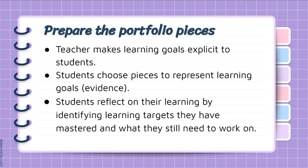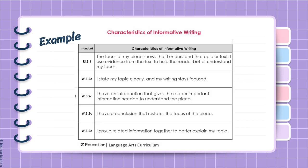Here's an example of a rubric I've used with informative writing — it's from EL Education, cited at the bottom. When students write a piece, this is something I use to give them feedback and that they can use to reflect on their own learning. If they choose this piece, the reflection is already done — they just have to think about how to talk about it, because the nature of the rubric lends itself to having the evidence right there. So this might be a good piece for them to pick without having to do extra reflection.